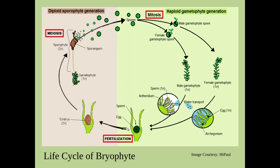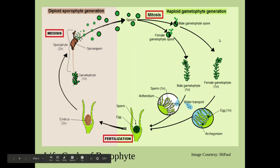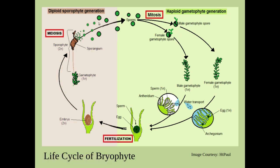If we try to understand with this graphical representation, here we can see the haploid gametophyte generation shown with light green color. This phase is the haploid phase, and the area which is pink in color is diploid, showing the diploid generation which is the sporophyte.